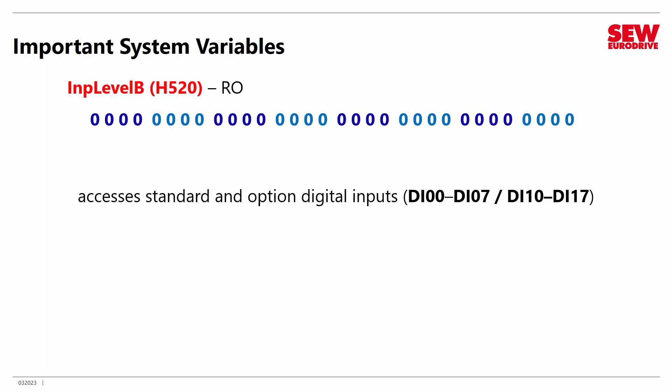Then we have Input Level B in H520. This allows you to read all the digital inputs, both the built-in ones and any on an option card. So you can read DI00 through DI07, as well as DI10 through DI17 — so all the digital inputs are available in one place. These are the built-in inputs, and these are the expansion options.